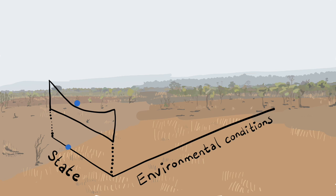If environmental conditions change, for example, if it becomes drier, this may change how the ecosystem responds to disturbances.